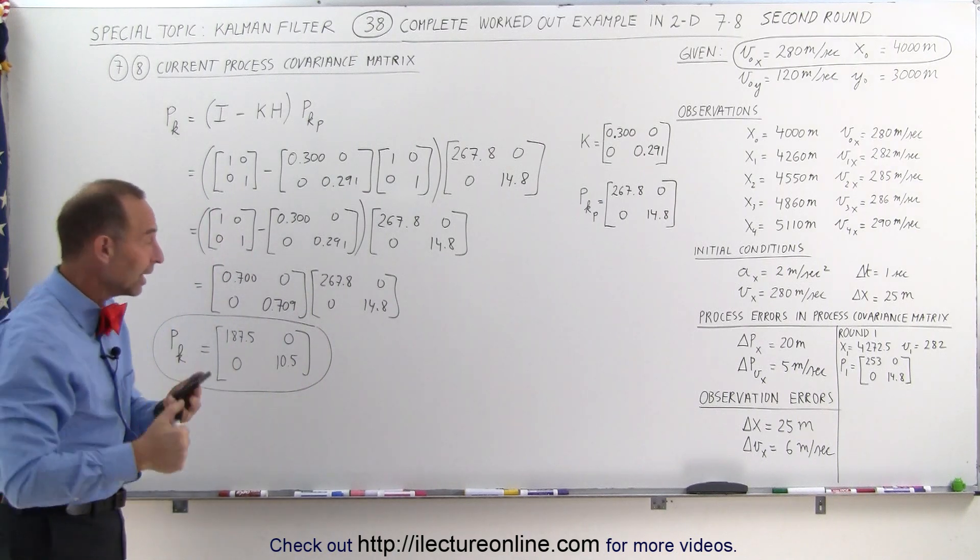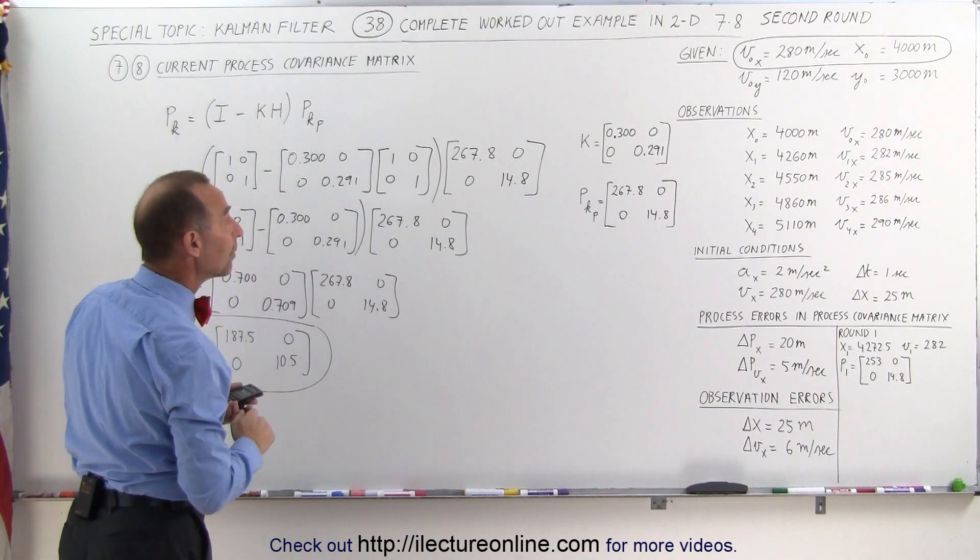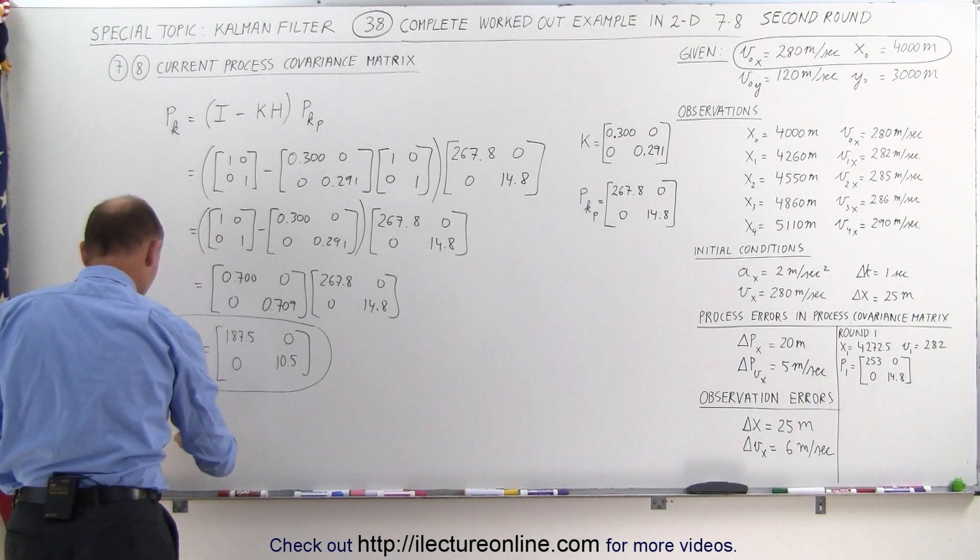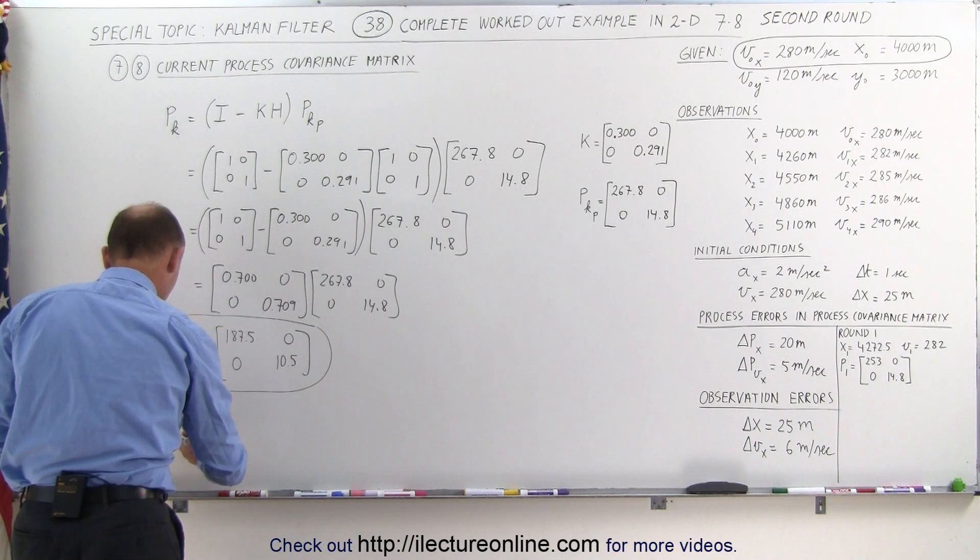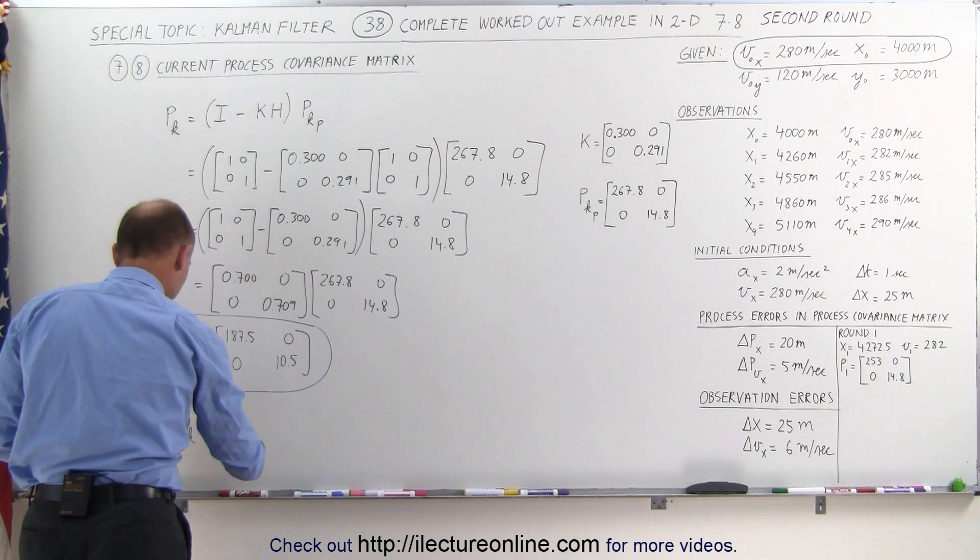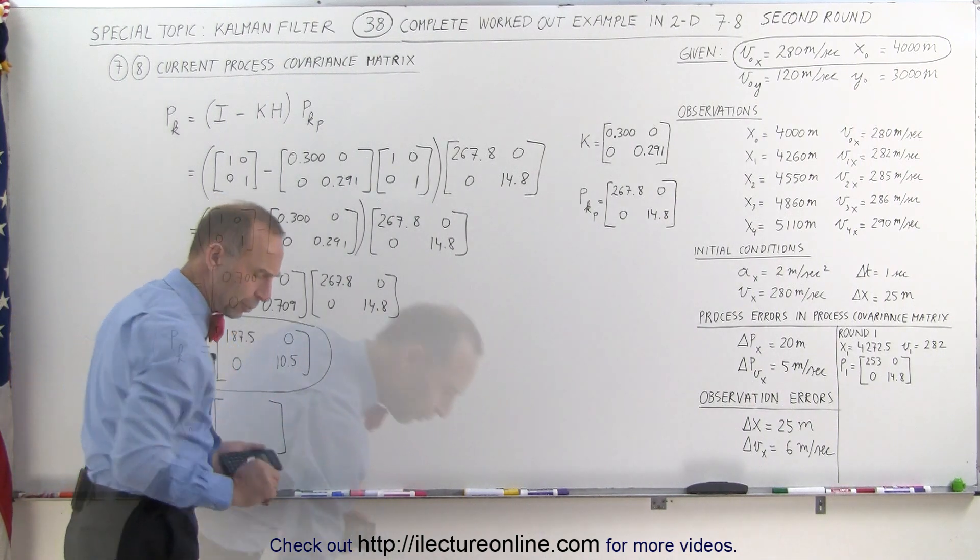To be carried over to the next round, and if we remember right, what was the position covariance matrix, or I should say the state matrix, x sub k was equal to, and I have to go look that up.